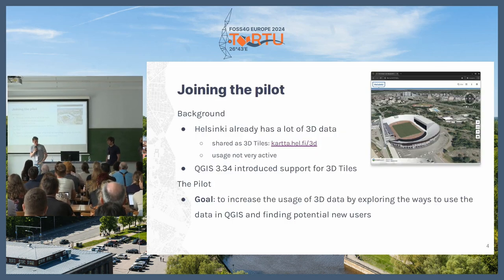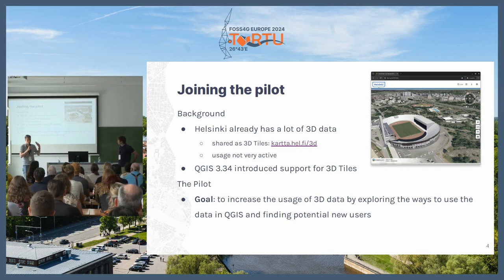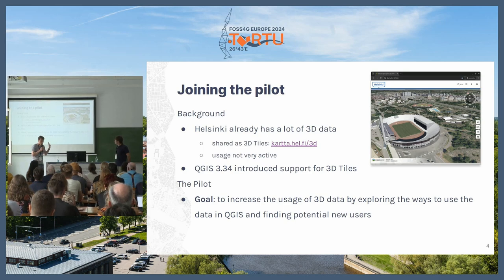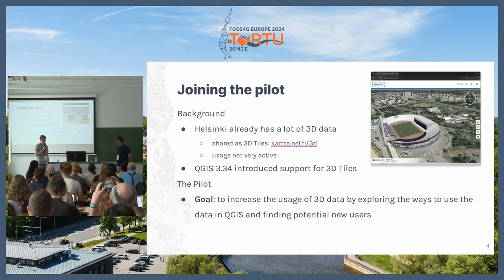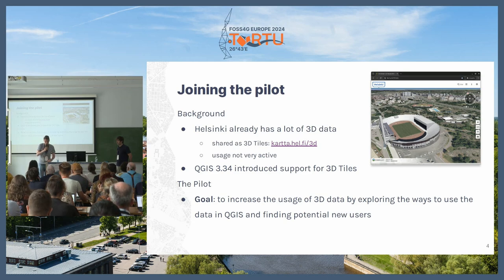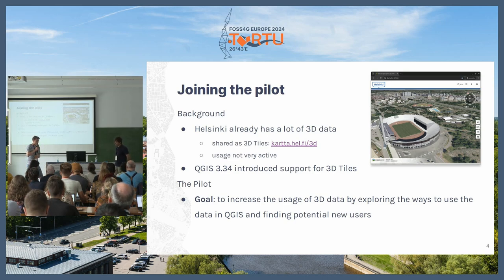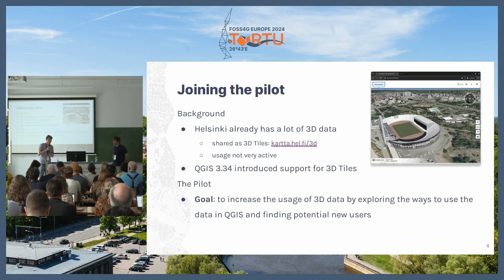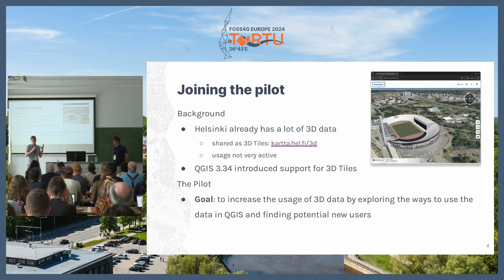About the pilot background: Helsinki has quite a lot of nice data and very nice 3D data. They publish it as 3D tiles — you can check it out at karta.hel.fi/3D. It's all there in the portal. But even though it's there and really cool to look at, it's not very actively used. So the idea was to figure out ways to get people — especially city officials — to use it more. And since QGIS 3.34, we have support for 3D tiles, which is a super cool feature.